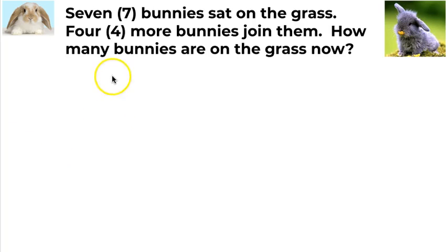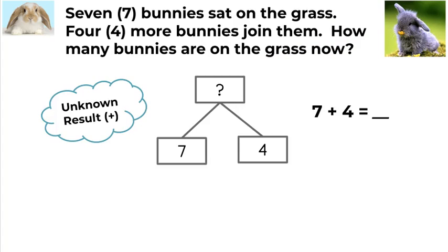As I look at this problem, I notice there are seven bunnies on the grass to start. Then four more bunnies join them. So four bunnies joining is the change. Joining means to add. So I know that seven bunnies are there plus four more bunnies. The question is asking me to find out how many bunnies are on the grass now. It's asking me to find the result. So I can build my math mountain and write an equation.